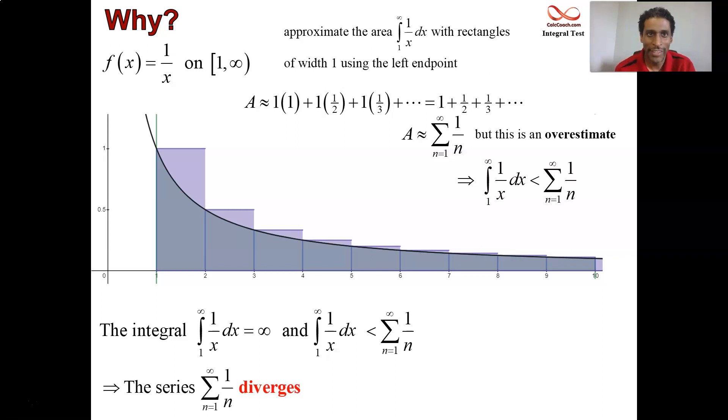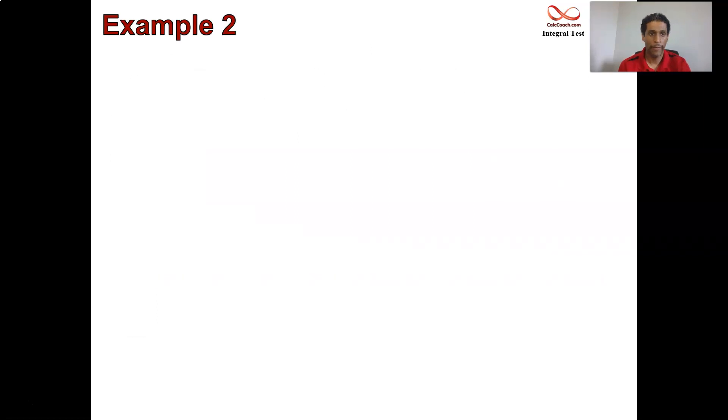But we know the area under the curve is infinite. So, the harmonic series is more than something that is infinite. And that's the why behind the scenes when you look at how these are tied together. Just think of approximating. Let's see if we can do the same thing for 1 over n squared.